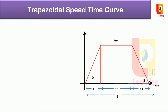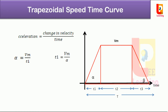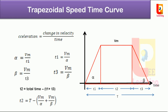We know that acceleration equals change in velocity with respect to time. Therefore, alpha equals Vm divided by T1, so T1 equals Vm divided by alpha. Retardation beta equals Vm divided by T3, so T3 equals Vm divided by beta. Therefore, free running time T2 equals total time T minus (T1 plus T3), giving T2 equals T minus Vm divided by alpha plus Vm divided by beta, by substituting the values of T1 and T3.